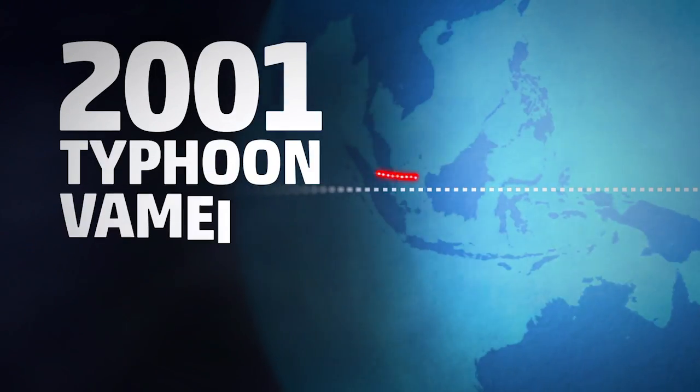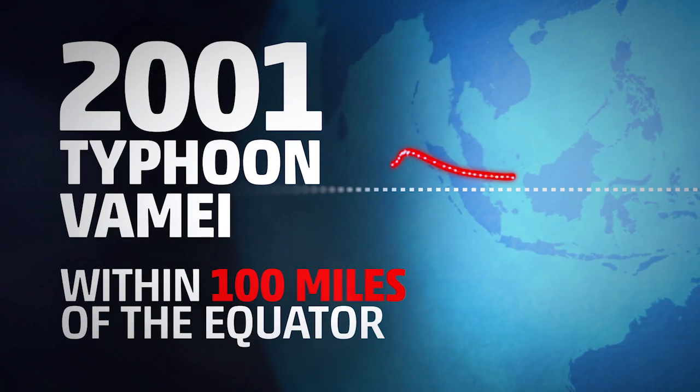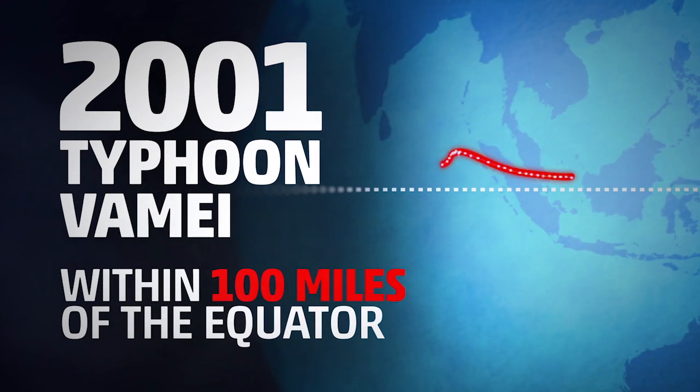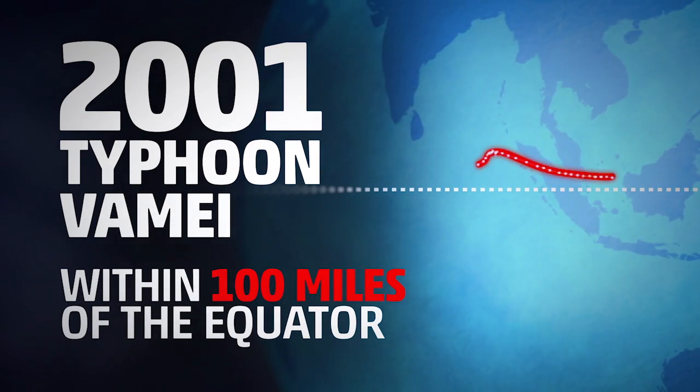In 2001, for example, Typhoon Vamei dipped to within about 100 miles of the equator, becoming the closest hurricane-strength storm to drift that far south. And that's impressive, no matter how you spin it.